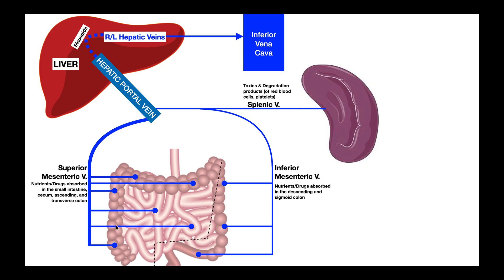The vast majority of drugs taken orally are going to be absorbed from the GI via the superior mesenteric vein. There are a few that may actually be absorbed via the inferior mesenteric vein, whose branches drain the descending colon, sigmoid colon, and parts of the rectum. That vein merges with the splenic vein, which drains contents of the spleen. Regardless of which region the drug is absorbed from, all routes lead to the hepatic portal vein and ultimately to the liver.